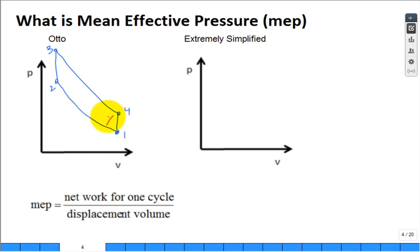And then we said the work net is this area enclosed, the net work for the cycle. So if you go one cycle, that's how many kilojoules per kilogram you would get out if this is specific volume.